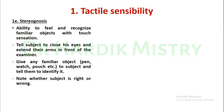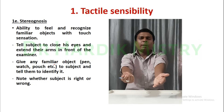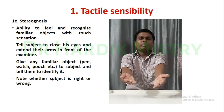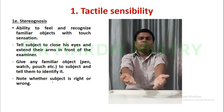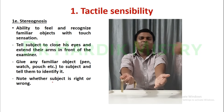Now the next is stereognosis — the ability to feel and recognize familiar objects with touch sensation. Tell the subject to close his eyes and extend their arms in front of the examiner. Give any familiar object, for example a pen, watch, or pouch, to the subject and tell them to identify it. Note whether the subject is right or wrong.